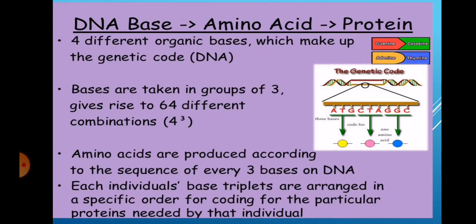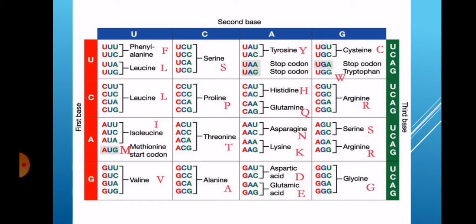DNA base, amino acid and protein. By transcription, you learned that messenger RNA contains nucleotides. Every three nucleotide bases are called a triplet and this triplet is a codon. There is one start codon and three stop codons among 64 codons. Each individual's base triplets are arranged in a specific order for coding for the particular proteins needed by that individual. In this slide, you can see the start codon AUG that means methionine. And stop codons are UAA, UAG and UGA.